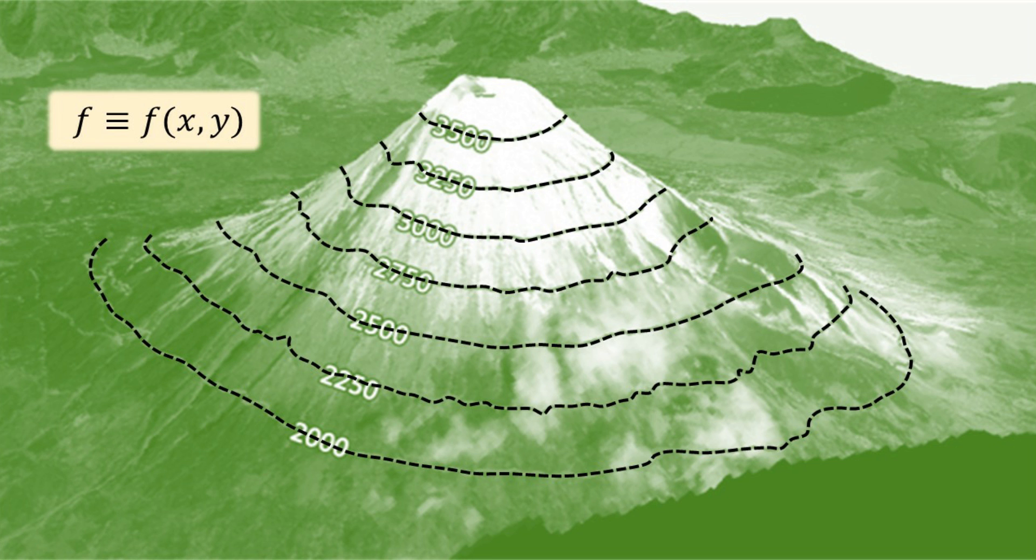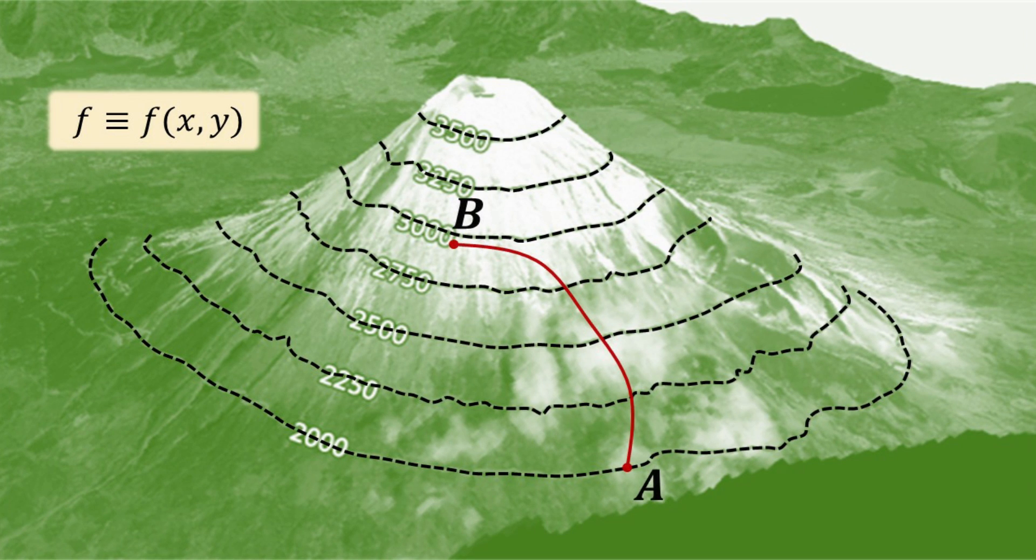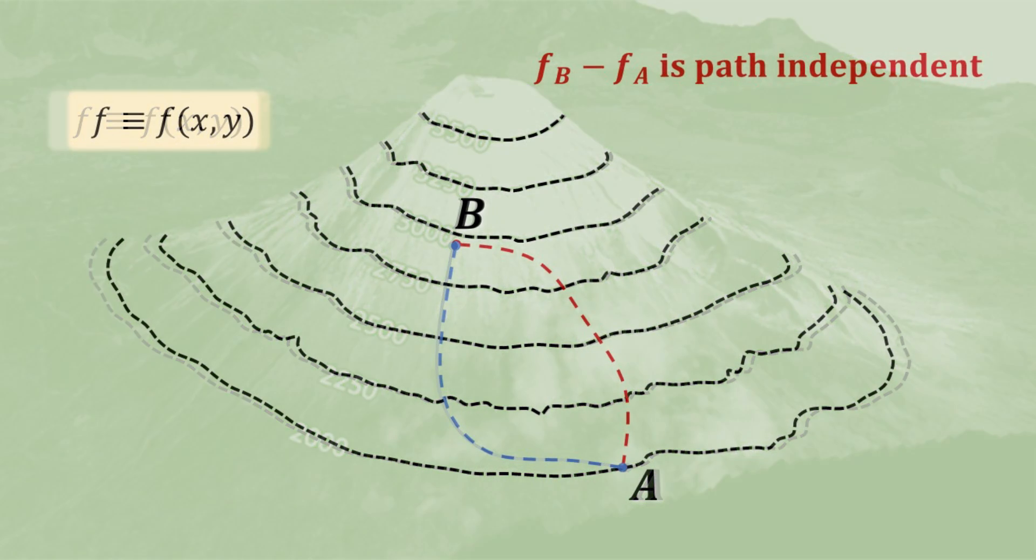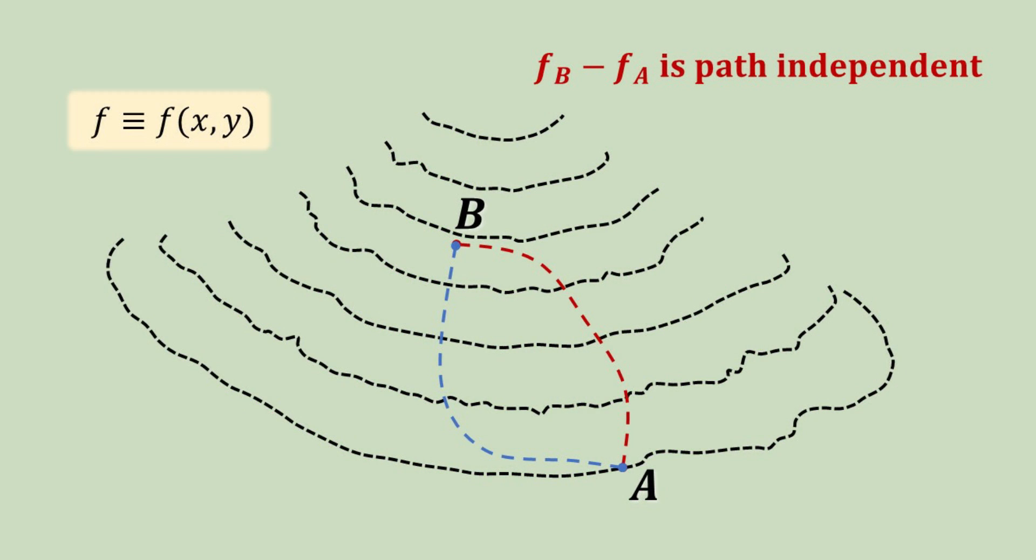Consider again our 2D scalar field. Consider going up the hill by taking the red path from A to B, or one can also take the blue path. Both paths start at A and end at B. Since F is the elevation, it is obvious that the change in elevation FB minus FA is path independent. More intuitively, instead of elevation, one can equivalently consider the potential energy V. This amounts to saying that the change in potential energy only depends on the starting and ending point.